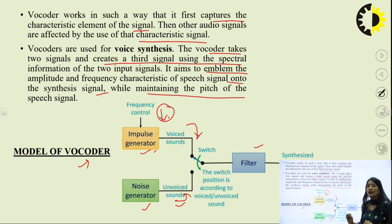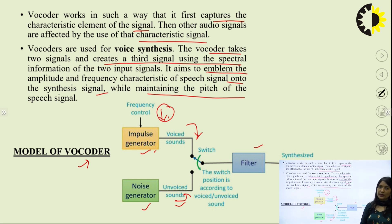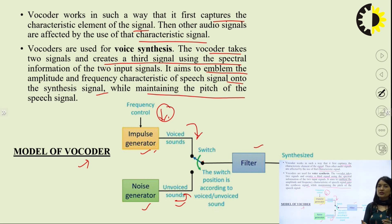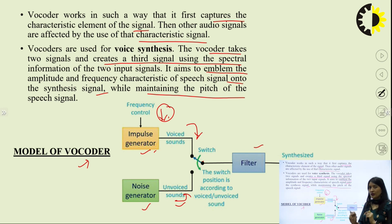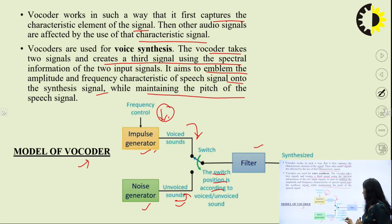For unvoiced sounds, we use the noise generator. We have a switch, and in a sentence there may be some voiced sounds and some unvoiced sounds. This switch will be switching from voiced to unvoiced as per what is spoken. Your speech will be converted into equivalent electromagnetic wave. The switch position is according to voiced and unvoiced sound. Then we have the filter, and then we have the synthesized speech waveform.